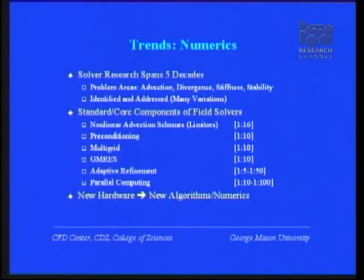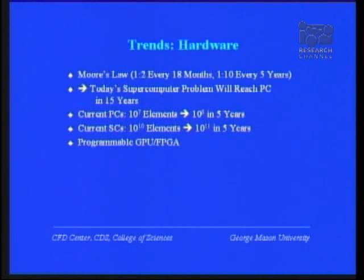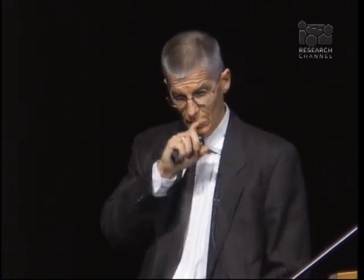The solver research spans five decades, and I've listed here some of the improvements, but with any new generation of hardware we have to go back and rethink at least part of the algorithms. Under Moore's law, today's supercomputer problem will reach the PC in 15 years. In the next five years on a PC you will be able to solve about 100 million elements, and on a supercomputer you might solve 10 to the 11 elements. The advance in games and graphics cards is now an interesting option to push computing power.